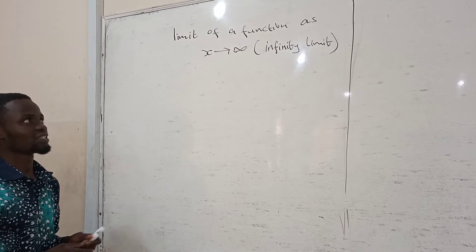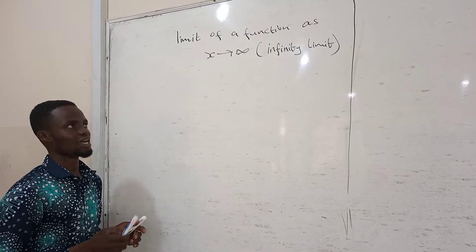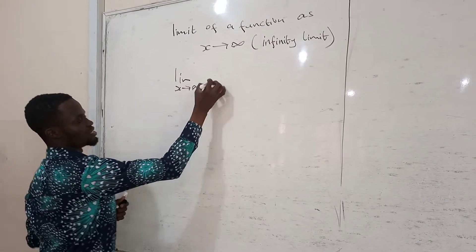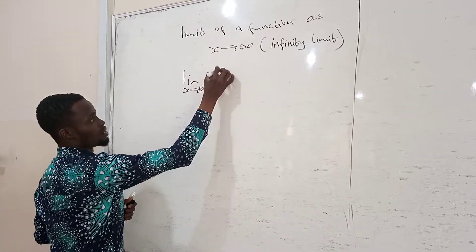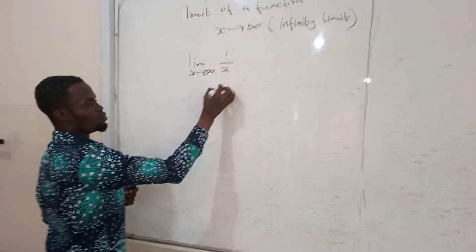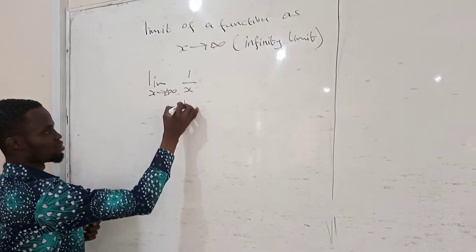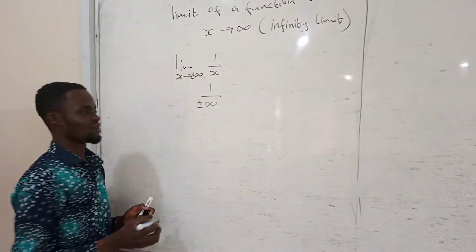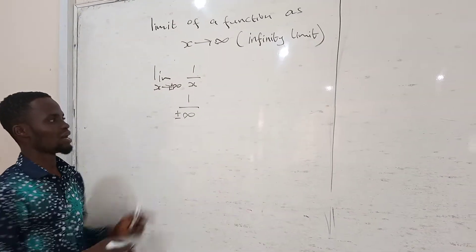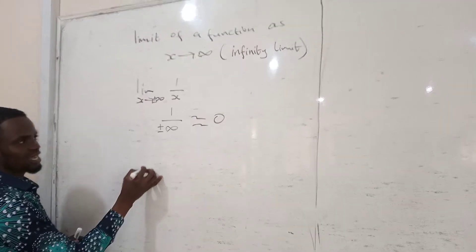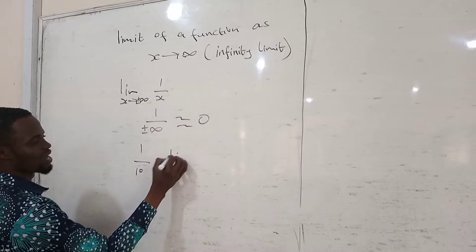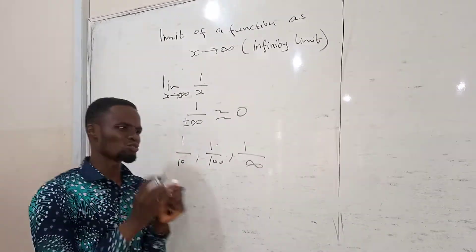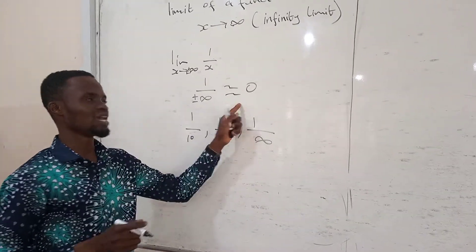We are here to solve the limit of a fraction as x approaches infinity — that is our infinity fraction. If you have the limit as x goes to infinity, it could be positive infinity or negative infinity, like 1 divided by x. Infinity is a very large number, so 1 divided by x becomes a very small number approaching 0. So we consider it to be 0.